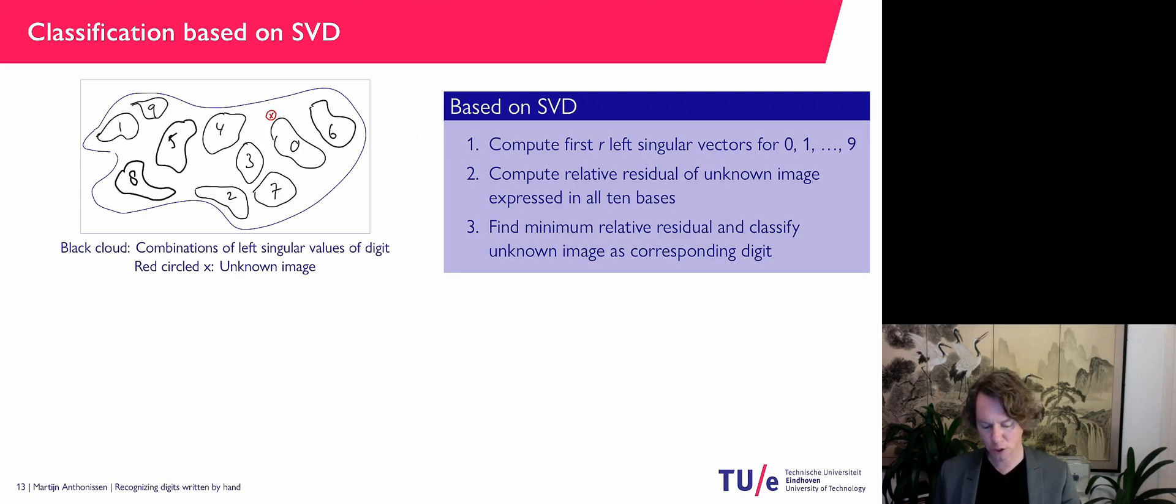So in an algorithm, I compute the singular vectors. I express my Z image into these singular vectors for each of the digits. And I compute the relative residuals. So how good is the approximation? I find the minimum one. And then that's how I'm going to label the unknown image. And the great thing here is that we now have a parameter.